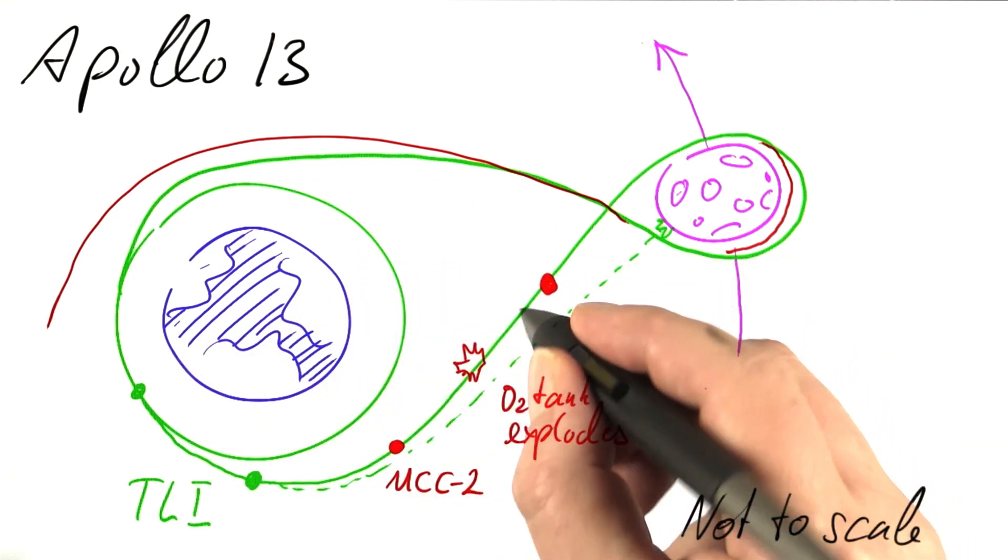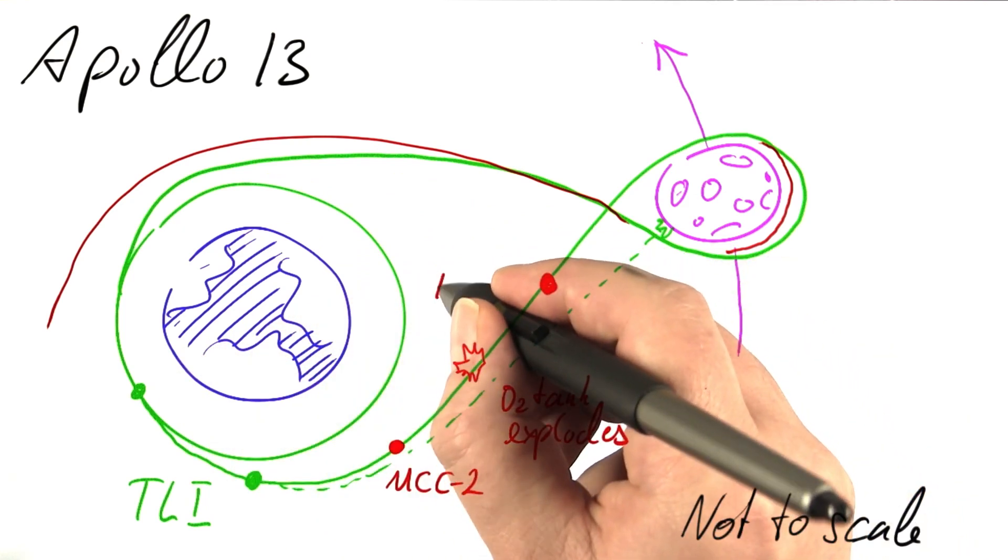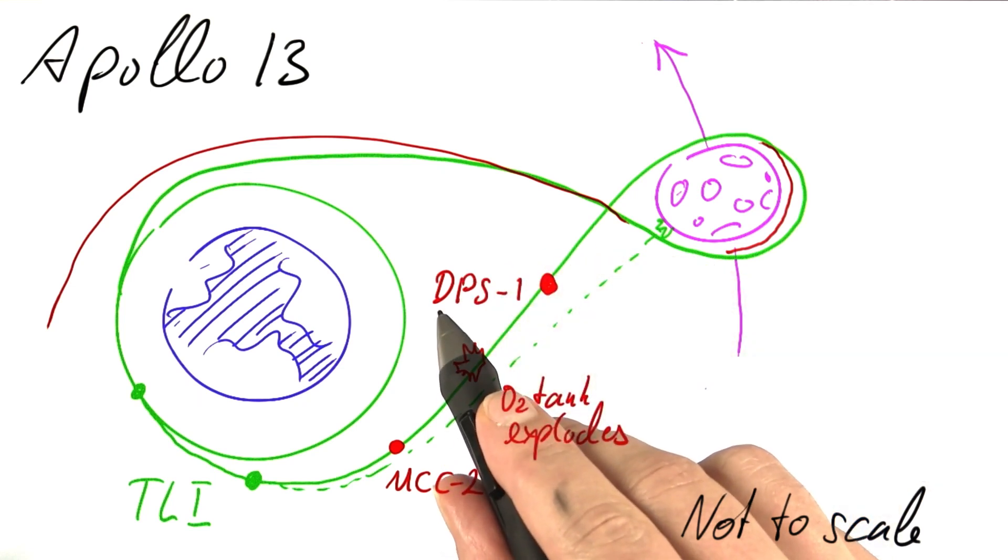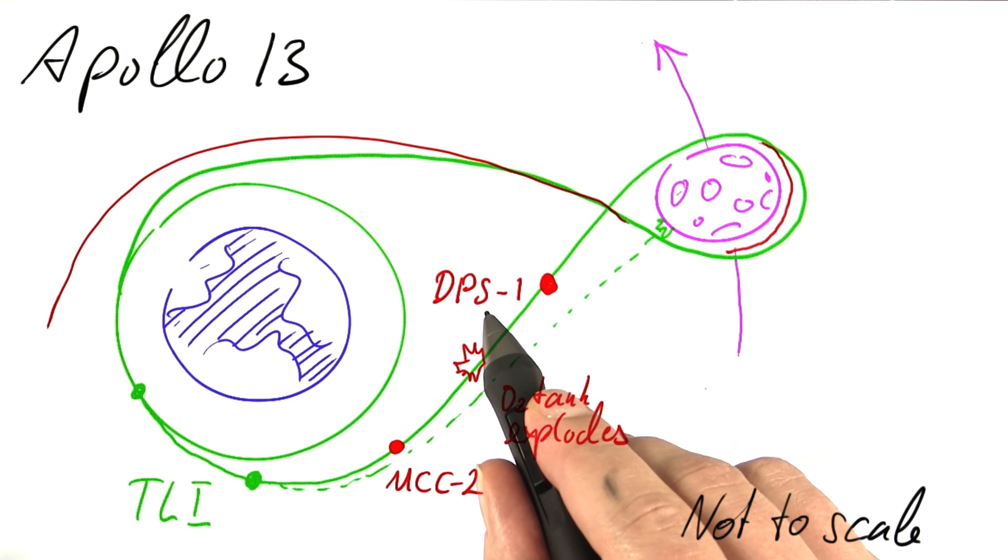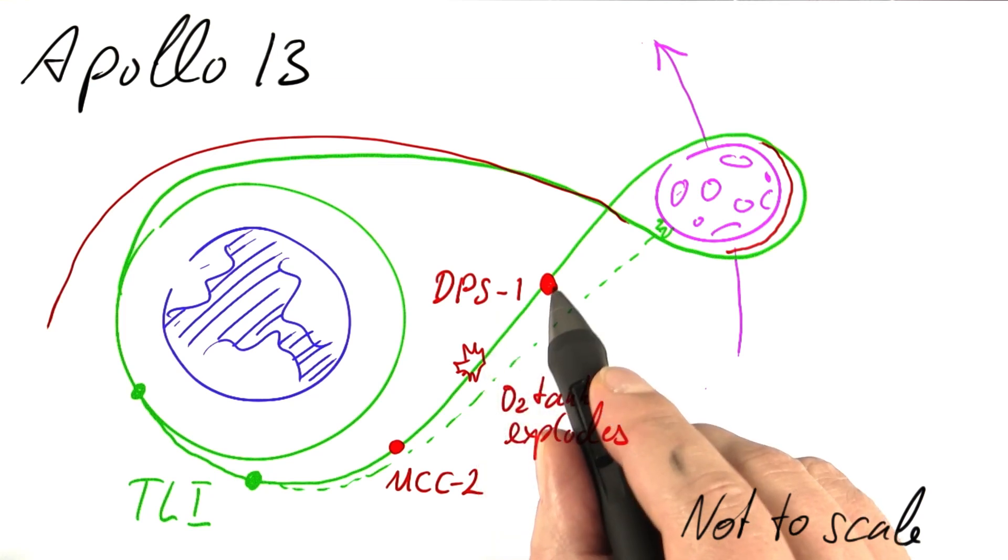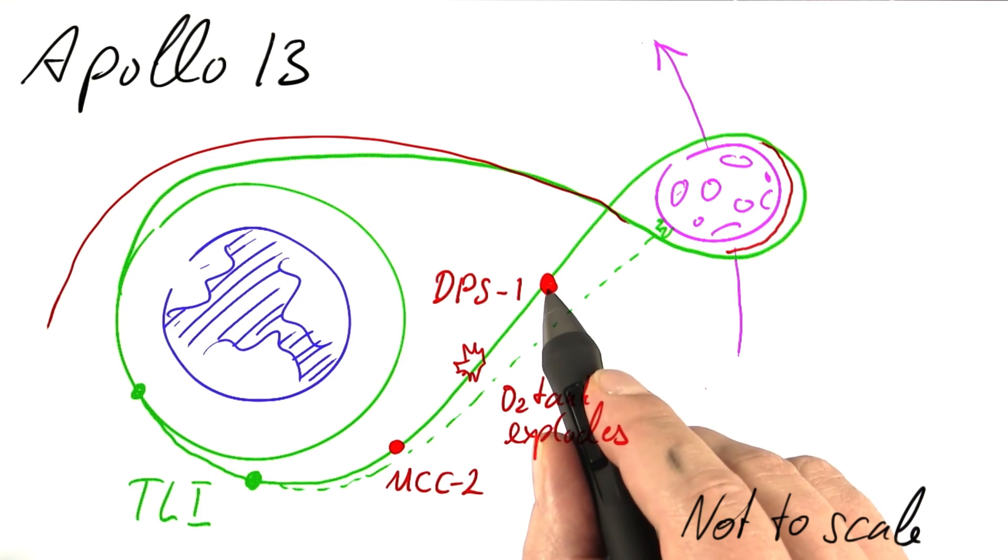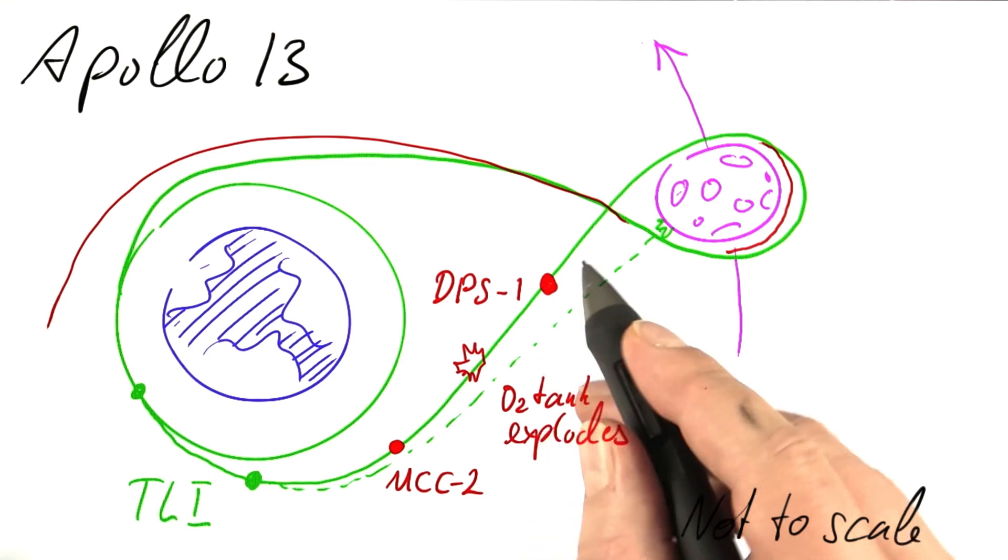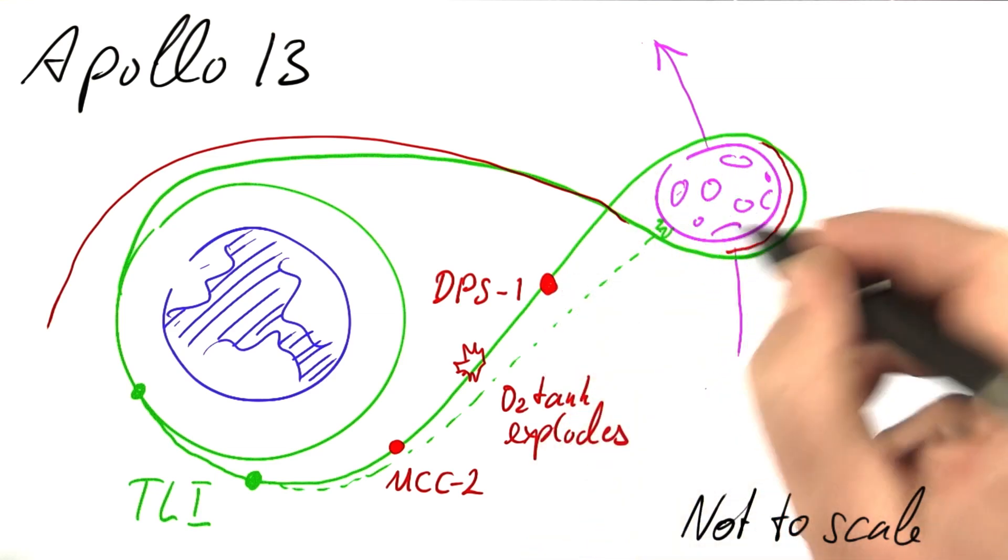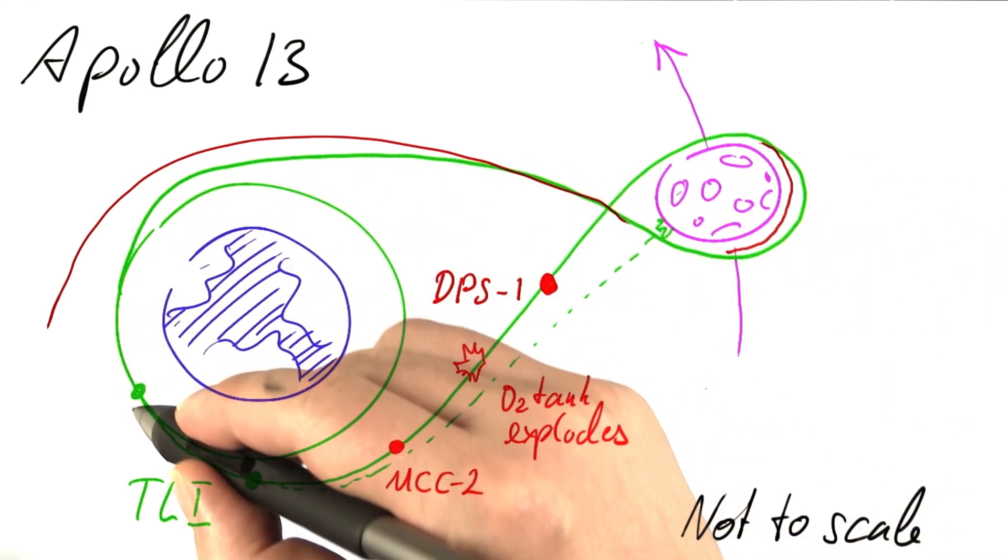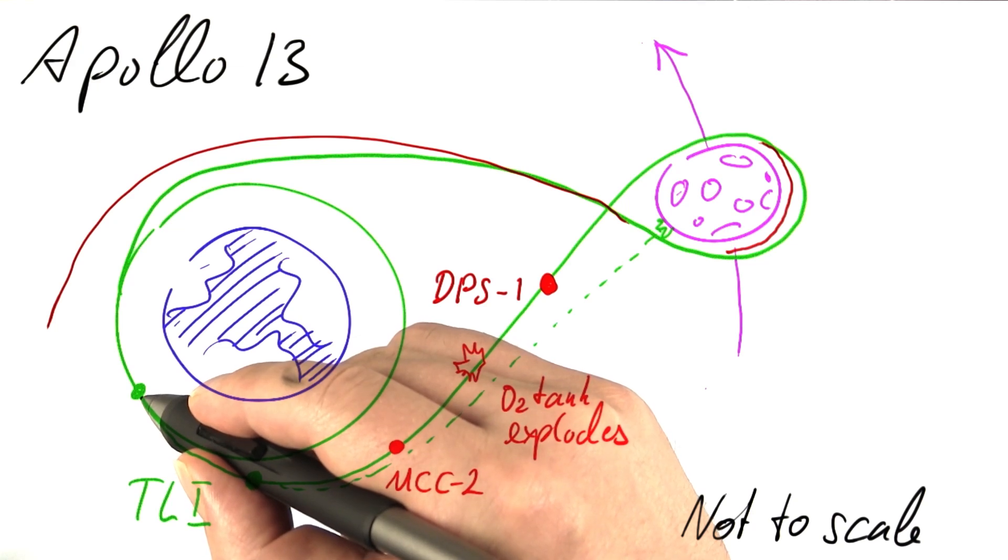The solution was to fire the rocket again. This maneuver was called DPS-1 for Descent Propulsion System. The rocket that has been fired actually was the rocket that was intended to safely land on the Moon. This has to be fired in such a way that we are taken back to a free return trajectory and eventually return to Earth.